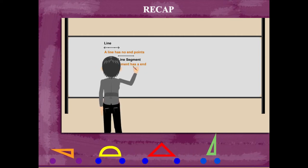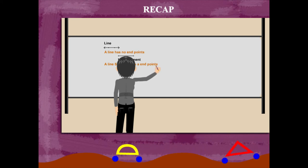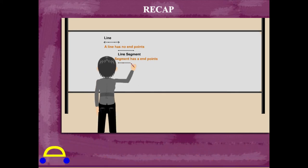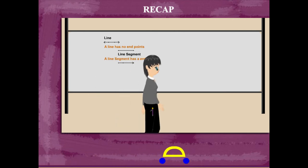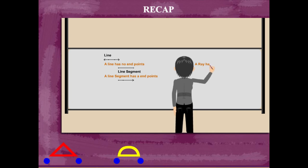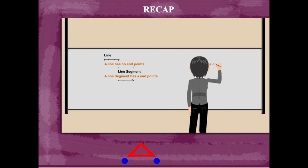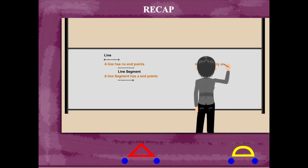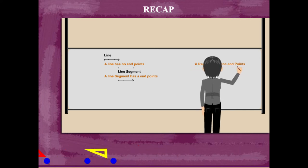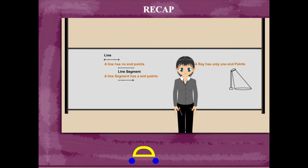A ray has only one end point. It is like the light from the lamp or the sun with an end point at where it falls.